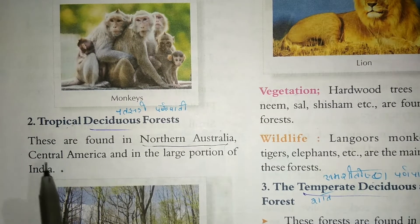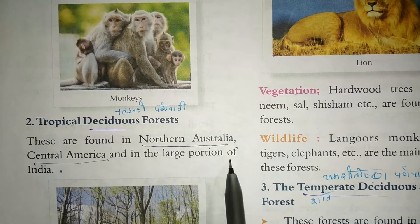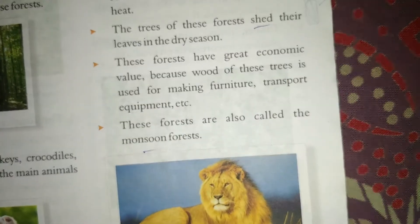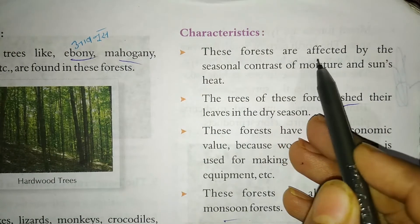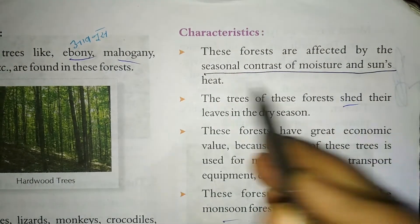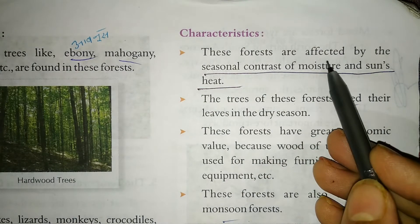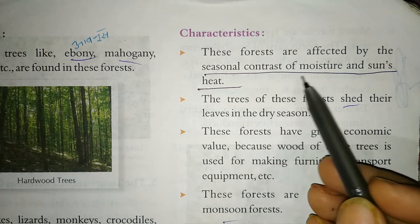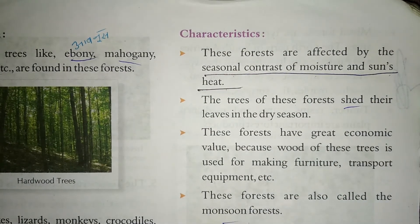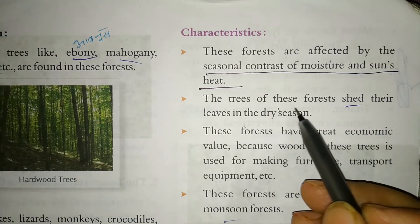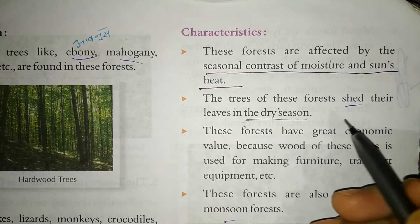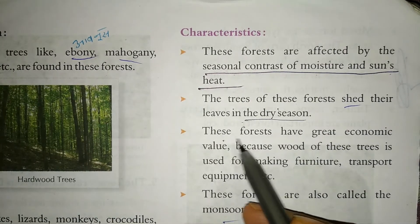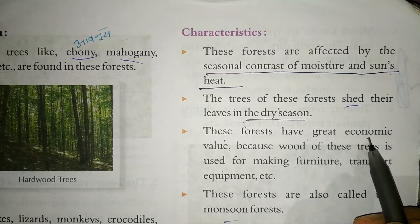Tropical deciduous forests are found in northern Australia, Central America, and in a large portion of India. The characteristics of these forests are that they are affected by the seasonal contrast of moisture. Trees in these forests shed their leaves in the dry season. These forests have great economic value.